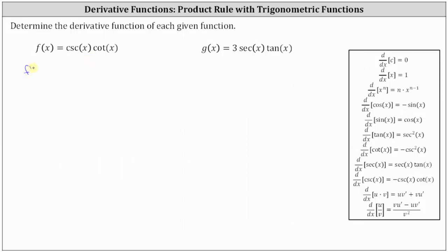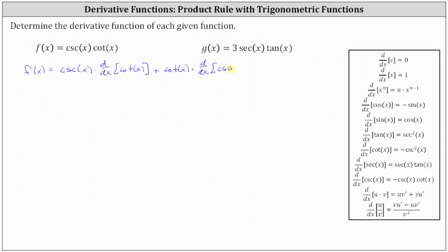Therefore, f prime of x is equal to the first function, cosecant x, times the derivative of the second function, which is the derivative of cotangent x with respect to x. Then we have plus the second function of cotangent x times the derivative of the first function, which is the derivative of cosecant x with respect to x.